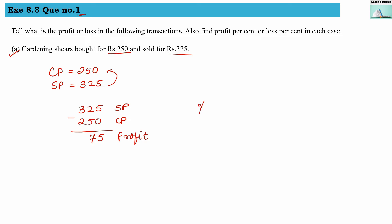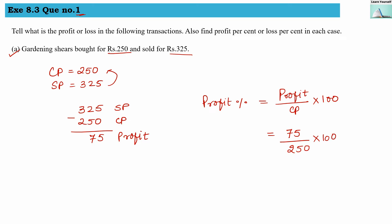Now we find the profit percentage. The formula is: profit divided by cost price, multiplied by 100. Our profit is 75 and cost price is 250, multiplied by 100. We can cancel the zeros, and 75 divided by 25 gives 3, so the profit percentage is 30 percent.